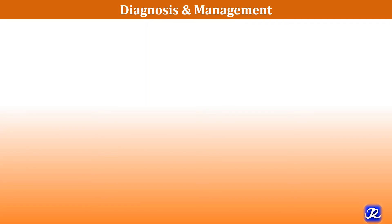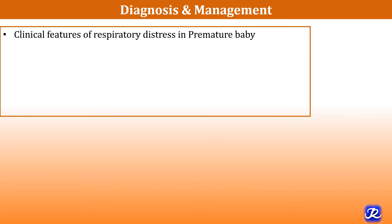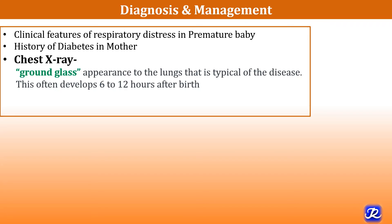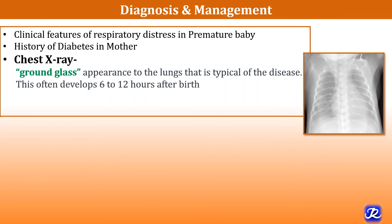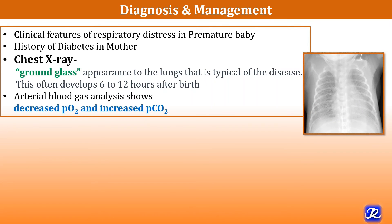Diagnosis of neonatal RDS is based on clinical features of respiratory distress in a premature baby, history of diabetes in the mother, chest X-ray showing ground glass appearance of the lungs — typical of the disease, often developing 6 to 12 hours after birth — and arterial blood gas analysis showing decreased partial pressure of oxygen and increased partial pressure of carbon dioxide. All these findings support the diagnosis of respiratory distress syndrome.